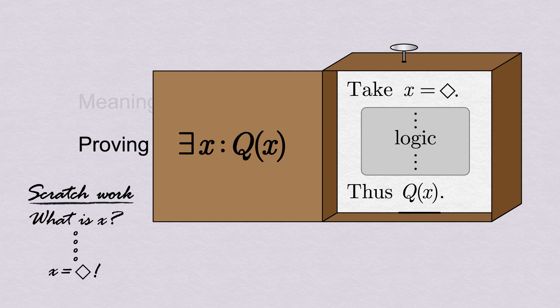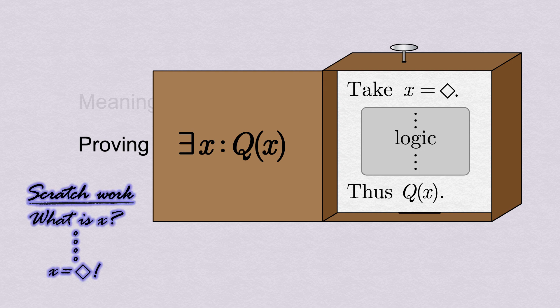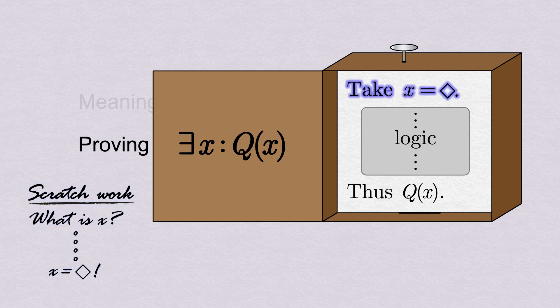To recap, proving a there exists statement consists of one preliminary step: finding an x by any means we like, which is not part of the proof. Then we simply take that value for our x in our proof, and work to logically deduce that Q(x) is true for that value of x.